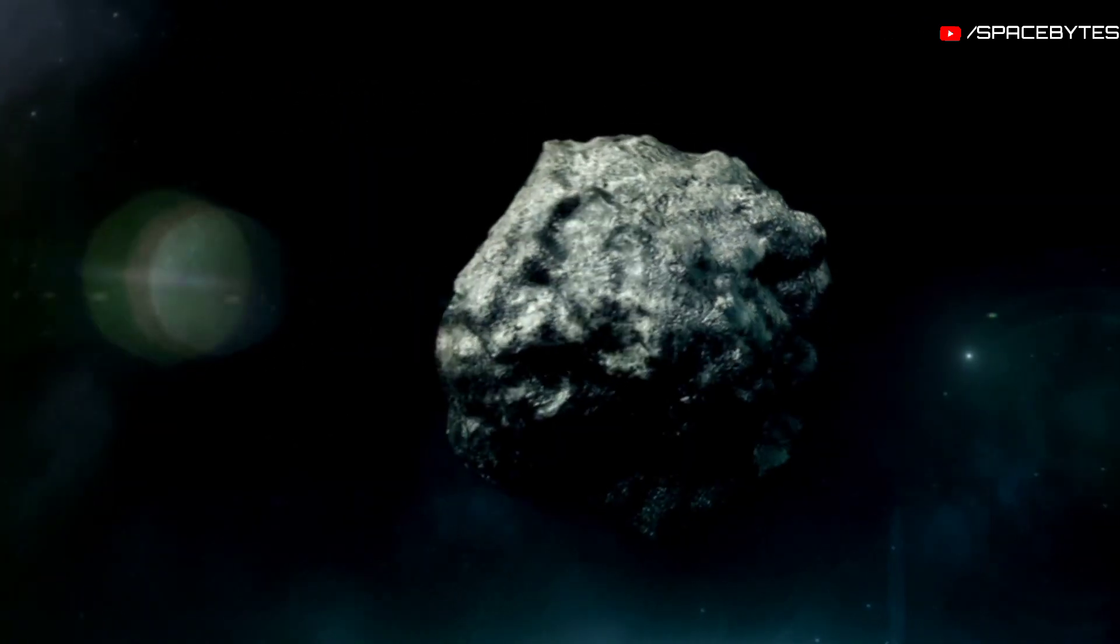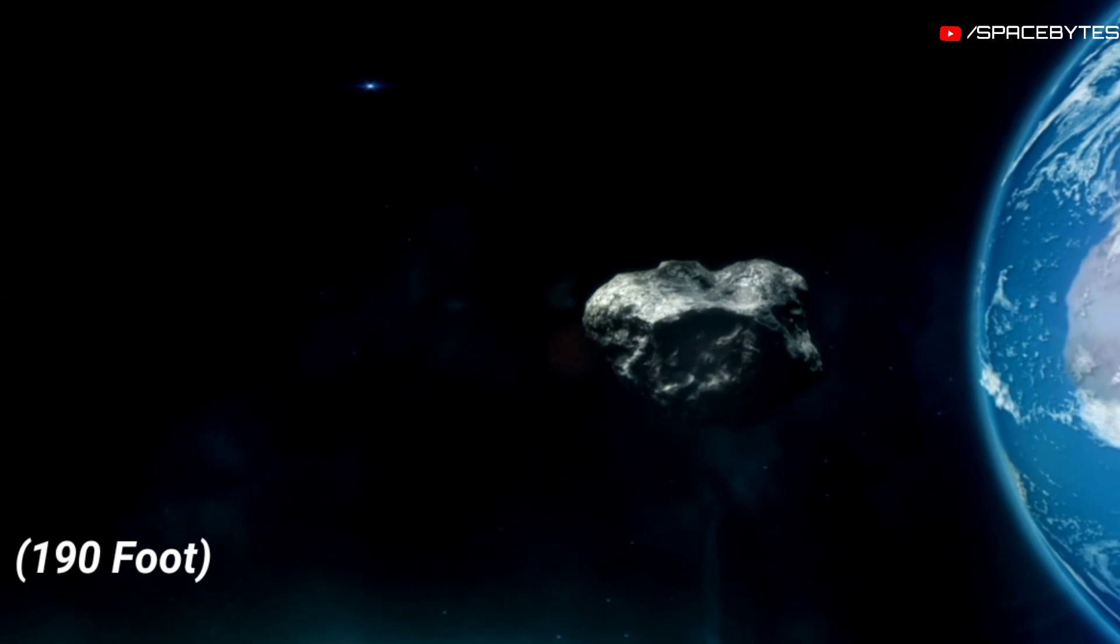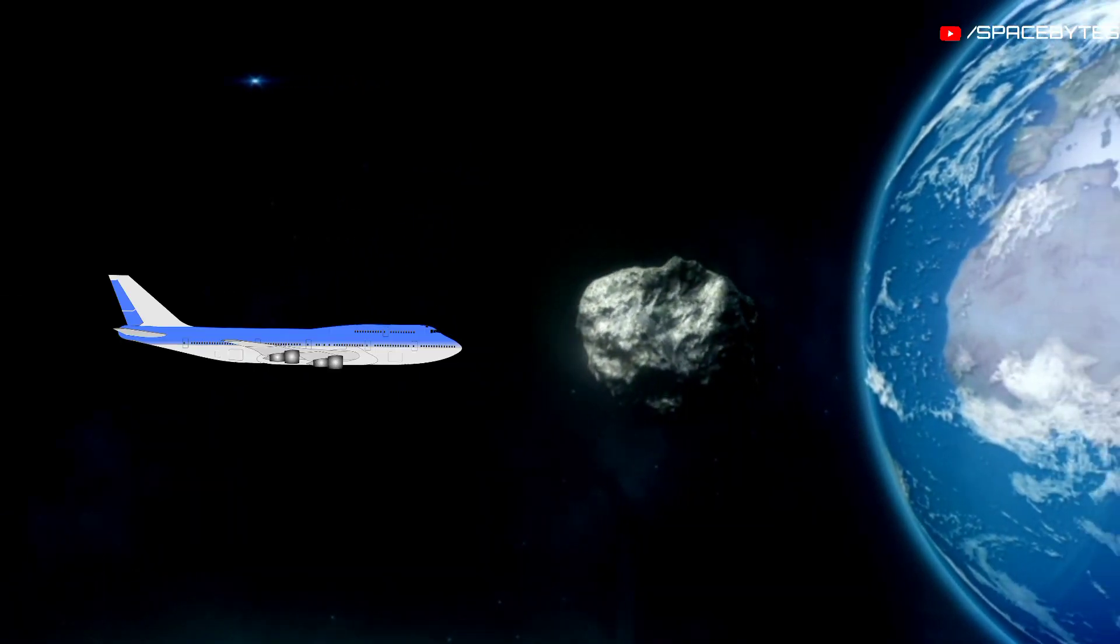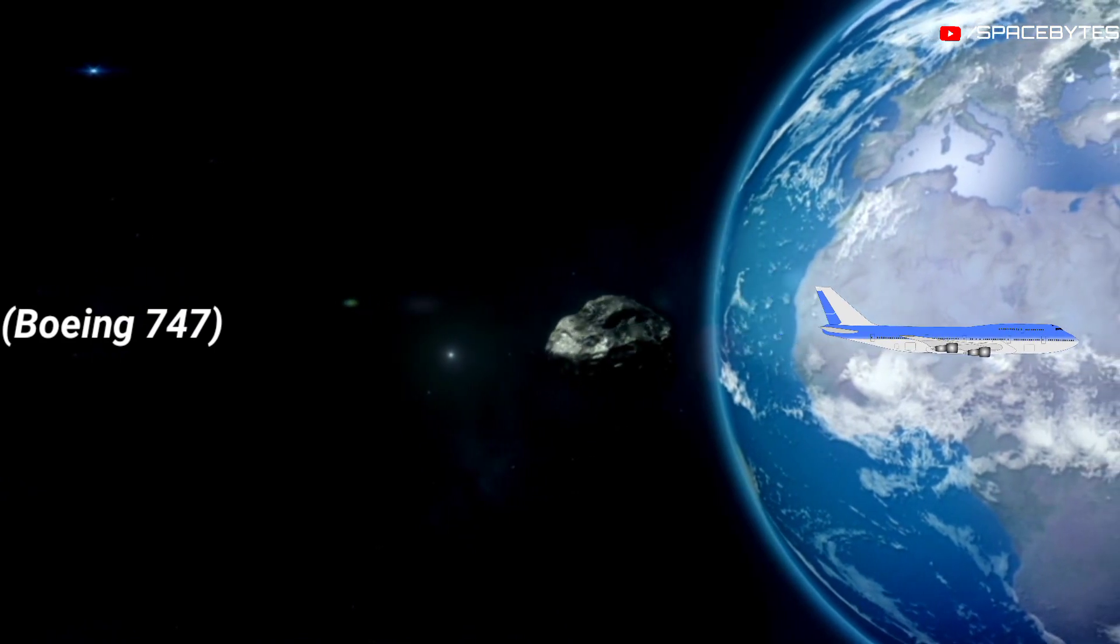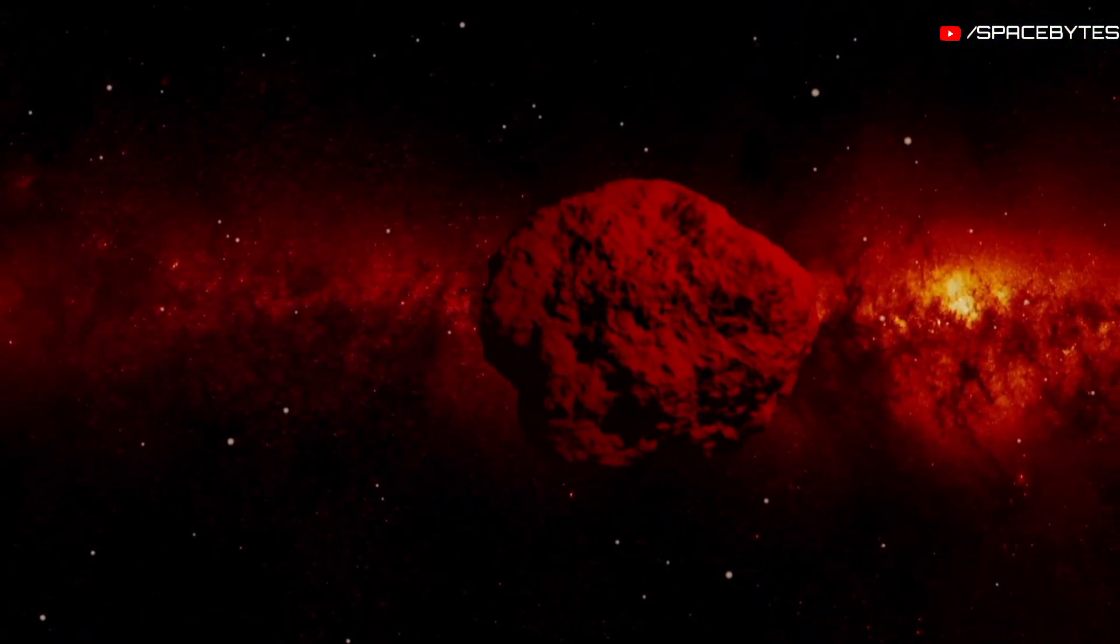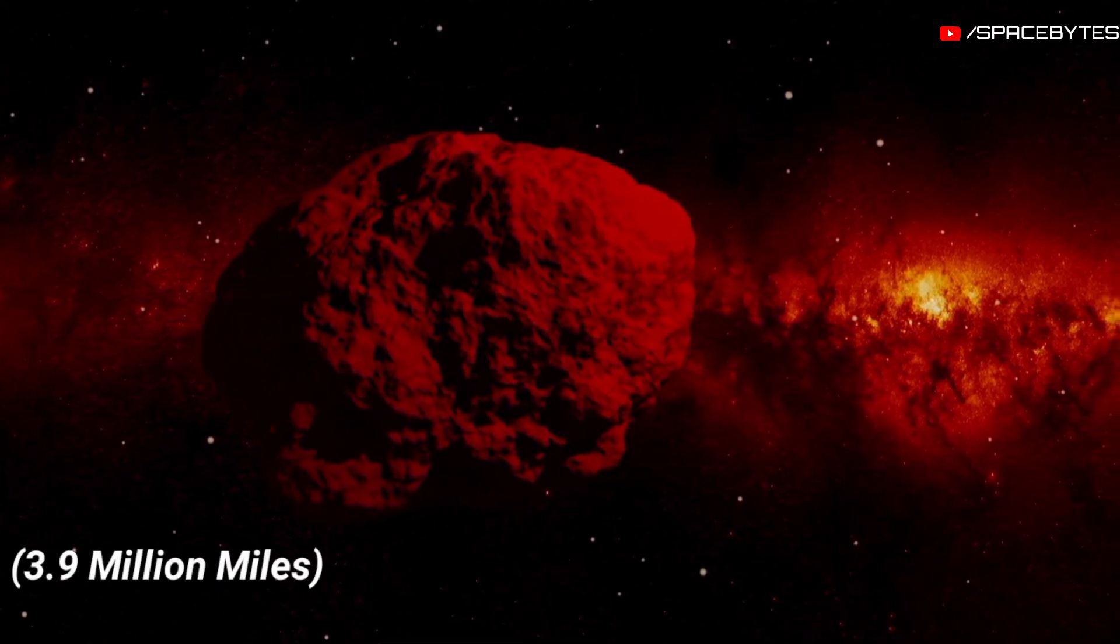The asteroid named 2022 PC is 190 feet wide, which is nearly the wingspan of the humongous aeroplane Boeing 747, one of the largest aircrafts in the world. The asteroid will whiz past Earth at a distance of merely 3.9 million miles.